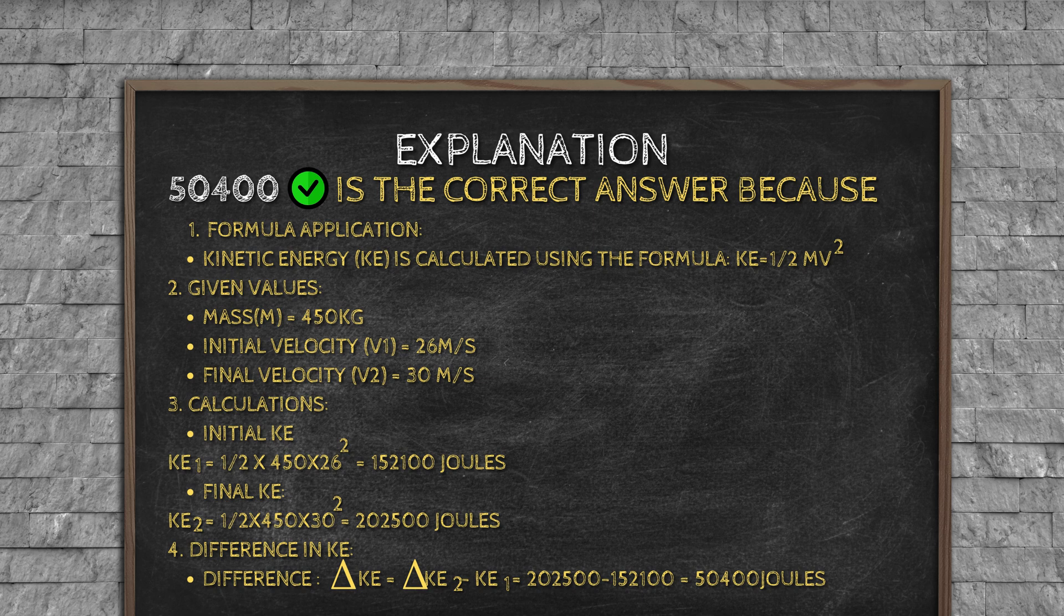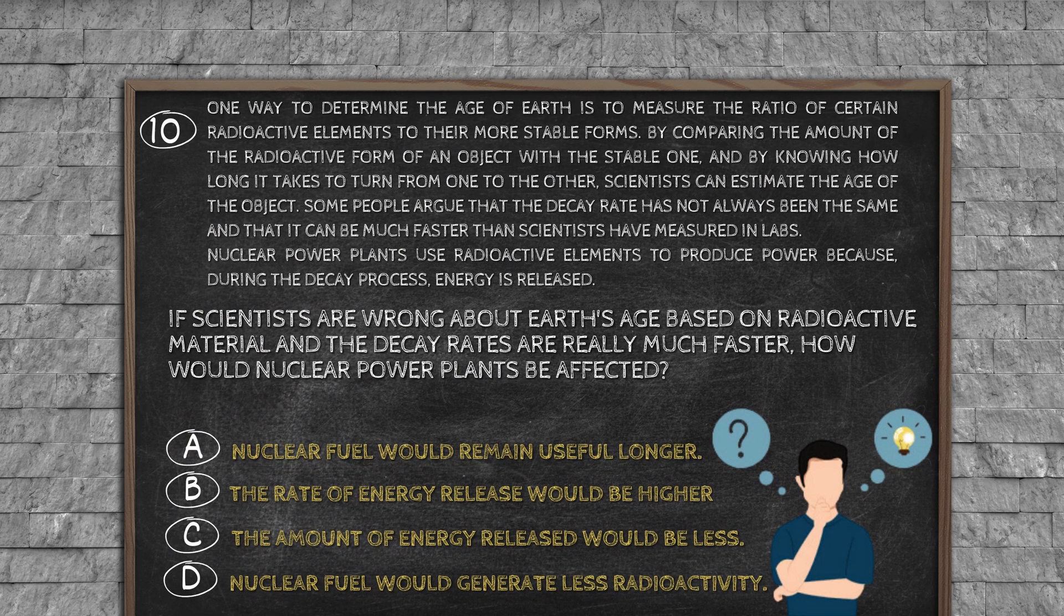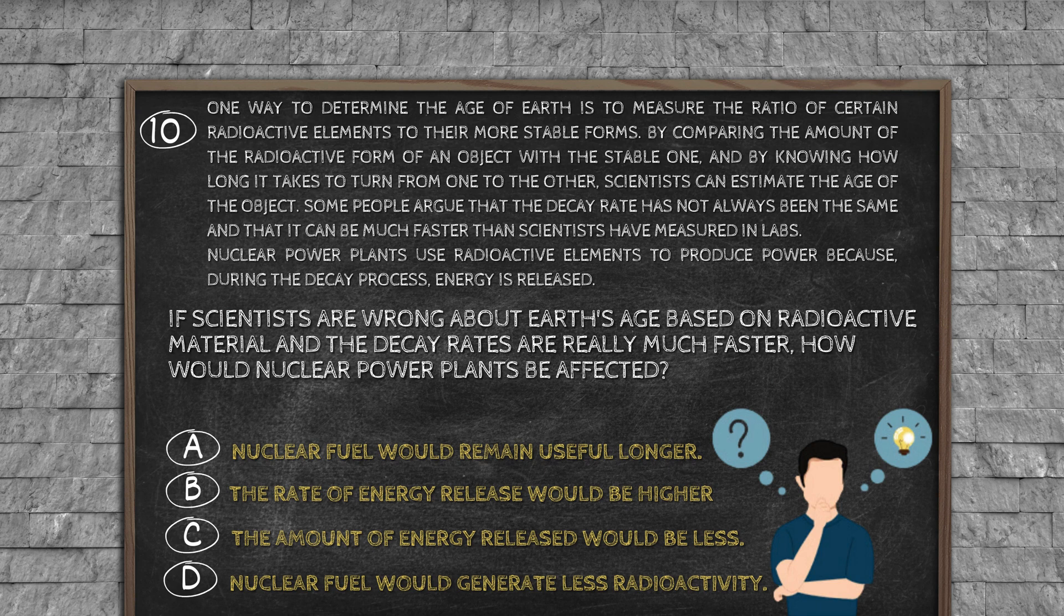Question number 10: One way to determine the age of Earth is to measure the ratio of certain radioactive elements to their more stable forms. By comparing the amount of the radioactive form of an object with the stable one, and by knowing how long it takes to turn from one to the other, scientists can estimate the age of the object. Some people argue that the decay rate has not always been the same, and that it can be much faster than scientists have measured in labs. Nuclear power plants use radioactive elements to produce power because, during the decay process, energy is released. If scientists are wrong about Earth's age based on radioactive material, and the decay rates are really much faster, how would nuclear power plants be affected? Option A: Nuclear fuel would remain useful longer. Option B: The rate of energy release would be higher. Option C: The amount of energy release would be less. Option D: Nuclear fuel would generate less radioactivity.